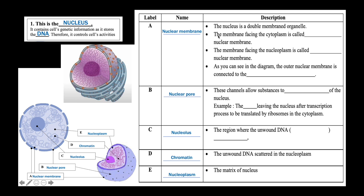The membrane facing the cytoplasm is called the outer nuclear membrane. The membrane facing the nucleoplasm, or inside of the nucleus, is called the inner nuclear membrane. As you can see in this diagram, the outer nuclear membrane is continuous, or connected, to the rough endoplasmic reticulum.